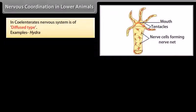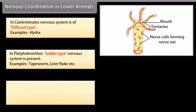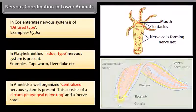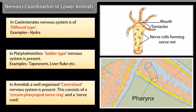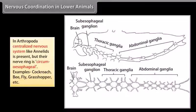In coelenterates, the nervous system is of diffused type — example, hydra. In platyhelminthes, a ladder-type nervous system is present — examples, tapeworm, liver fluke, etc. In annelids, a well-organized centralized nervous system is present, consisting of a circumpharyngeal nerve ring and a nerve cord. In arthropoda, a centralized nervous system like annelids is present, but their nerve ring is circumesophageal.